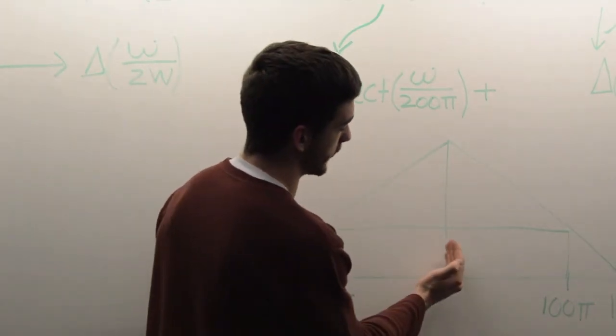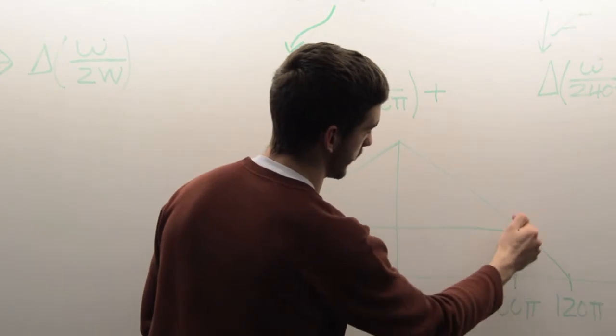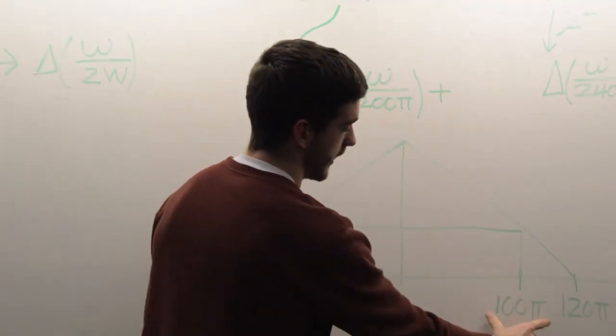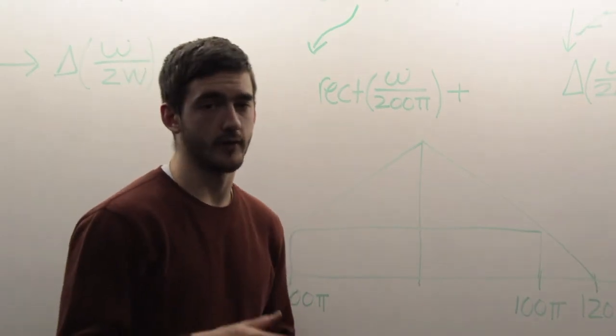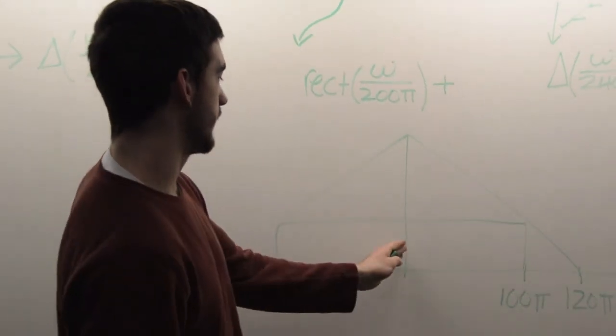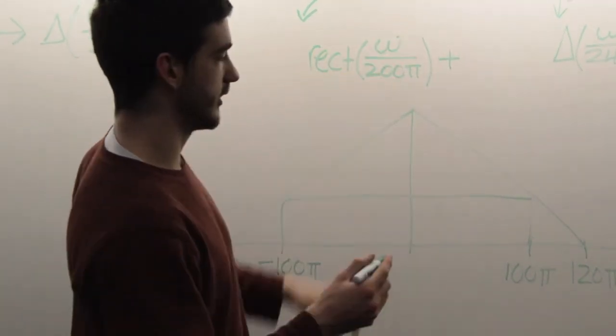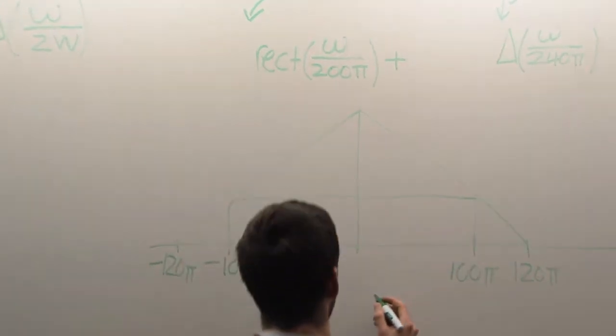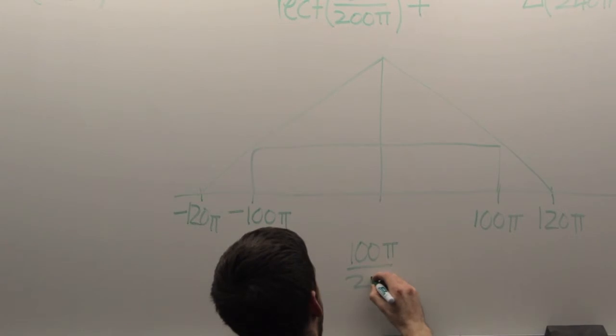If you look here, the bandwidth is from here to here, from the center out to this rightmost point. That's 100 pi radians. If you want to convert that to frequency, you divide by 2 pi. So we know that the bandwidth of this rectangle function is 100 pi divided by 2 pi equals 50 hertz.